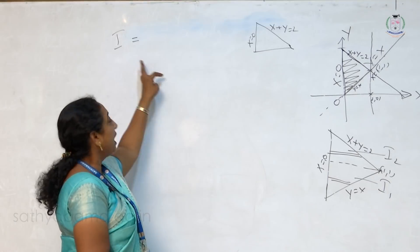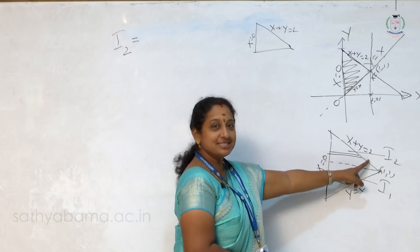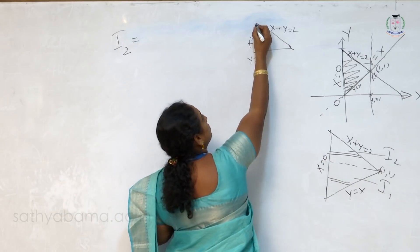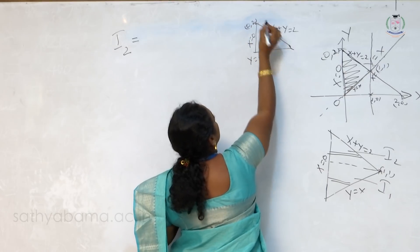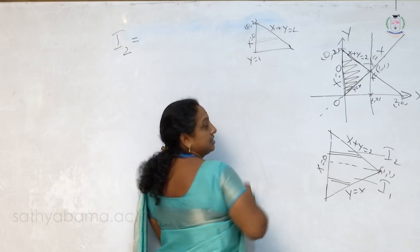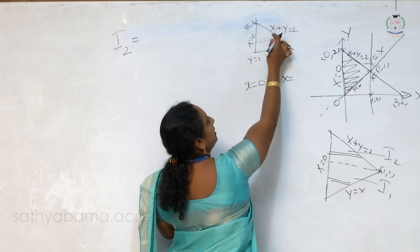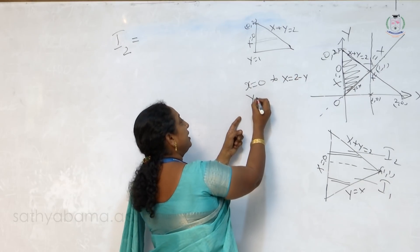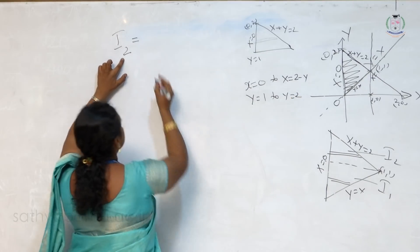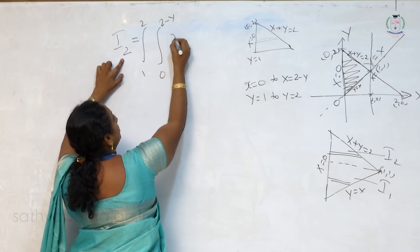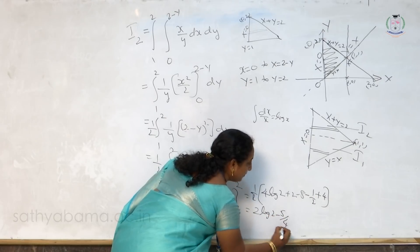Next, we evaluate I2 — the second region, which is the top triangle. For I2, the left-hand side is x is equal to 0 and the right-hand side is x plus y equal to 2. y ranges from y is equal to 1 to y is equal to 2, since the intercepts are (0,2) and (2,0). Considering the horizontal strip, the lower limit for x is 0 and the upper limit is x equal to 2 minus y. Therefore I2 is the double integral from 0 to 2 minus y (inner) and 1 to 2 (outer) of x by y dx dy. Evaluating, I2 equals 2 log 2 minus 5 by 4.